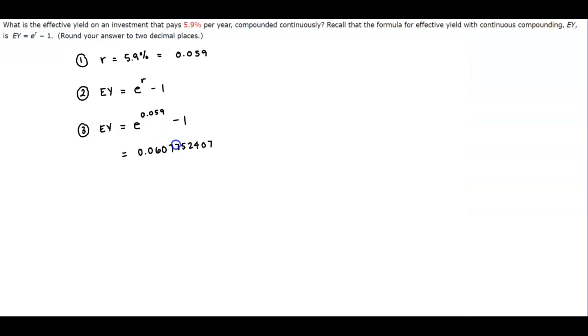And so we want to round our answer to two decimal places and we want to convert that to a percentage. So we're going to move this over 1, 2, and so that becomes 6.0 and at 7 so we're going to round that up to 8. So that's 6.08 percent.